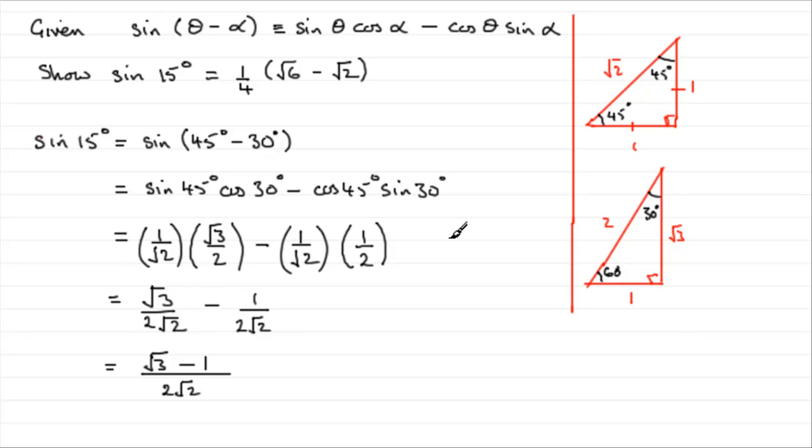So we can rationalise this by timesing top and bottom of this fraction by root 2. So I'll just slip it in there. Remember multiplying top and bottom by the same thing, this is 1, so you're multiplying by 1 effectively. It's going to keep the same value but just change the appearance of it.